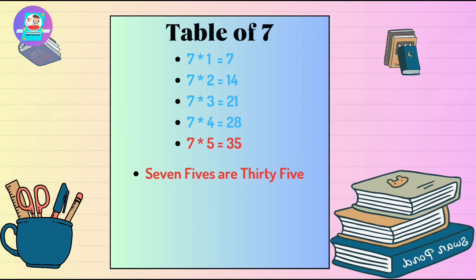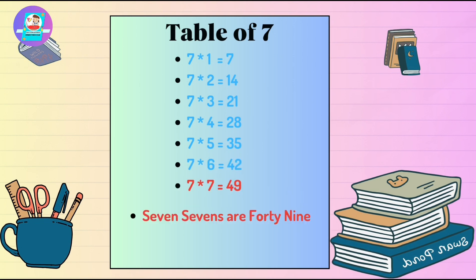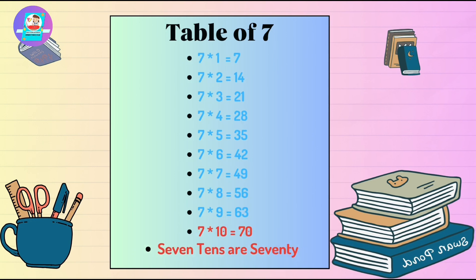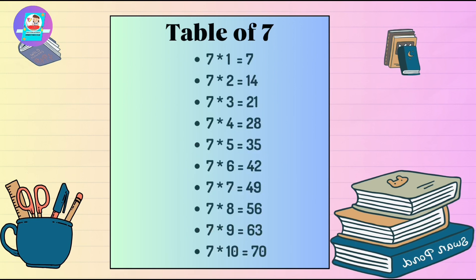7 5's are 35. 7 6's are 42. 7 7's are 49. 7 8's are 56. 7 9's are 63. 7 10's are 70.